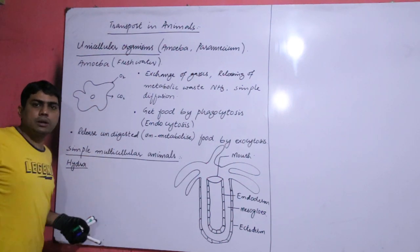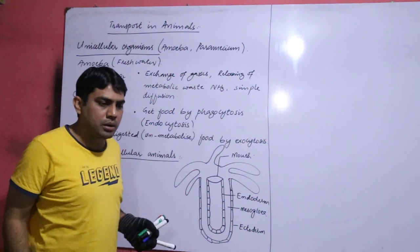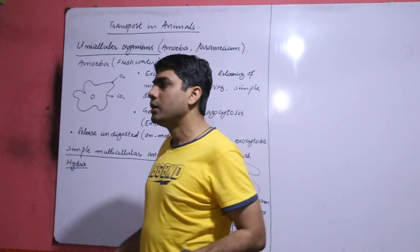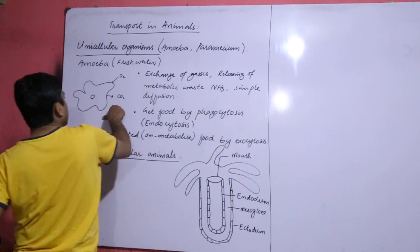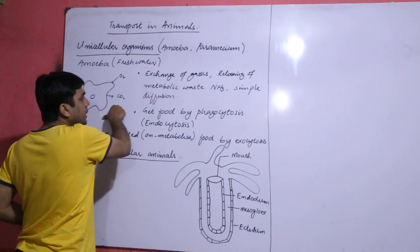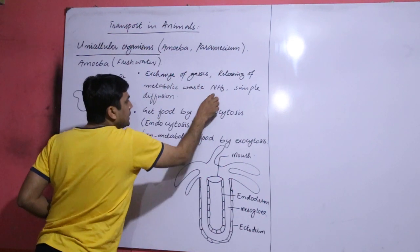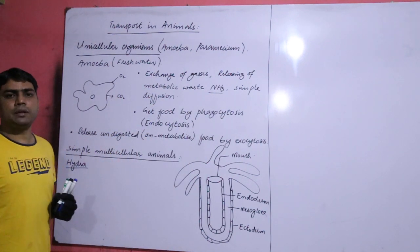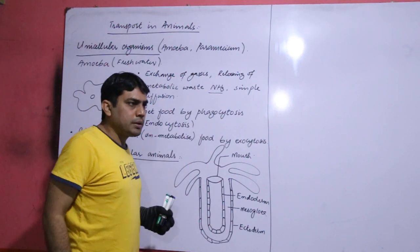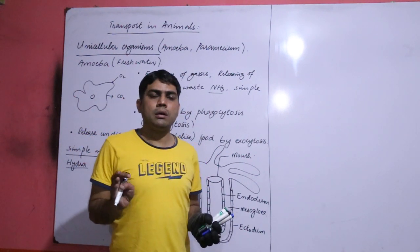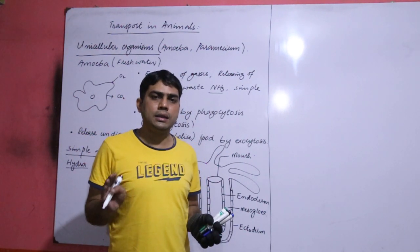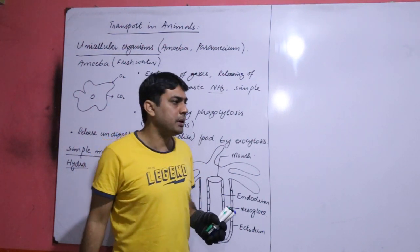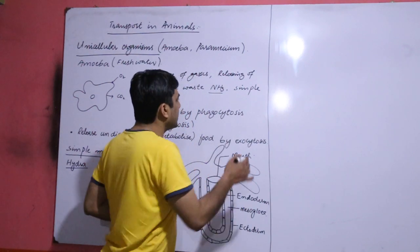The outermost boundary of this organism is a plasma membrane. Amoeba lives in fresh water and it exchanges gases and releases metabolic waste by simple diffusion. Simple diffusion means ammonia, oxygen and carbon dioxide, these are gases. These gases cross directly through phospholipids. If molecules cross directly through phospholipids, that process is called simple diffusion.